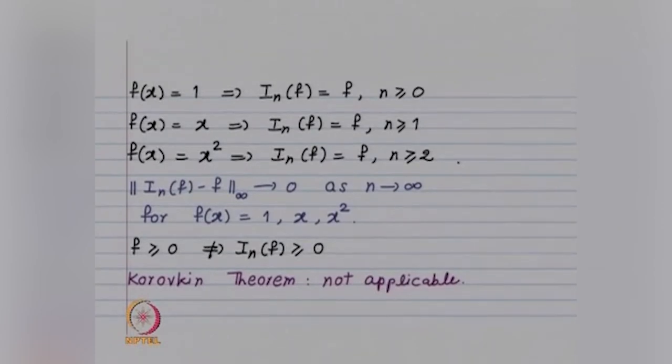Recall the Korovkin theorem: if you have a sequence of maps which are linear and positive such that there is convergence for the three functions 1, x, and x², then there is convergence for all continuous functions. When we showed that Bernstein polynomials converge to f in the infinity norm, it was Korovkin's theorem we used. Our new map Iₙ is linear and converges for the three functions 1, x, x², but it is not going to be positive.